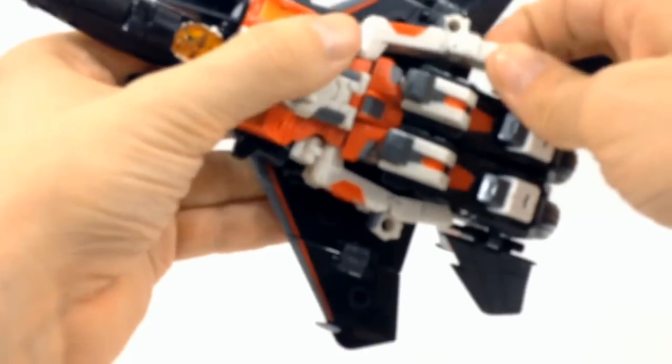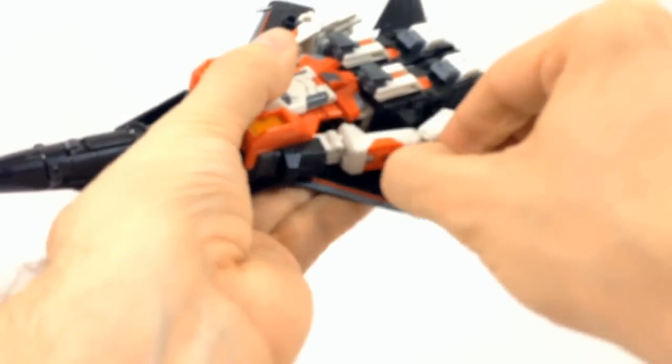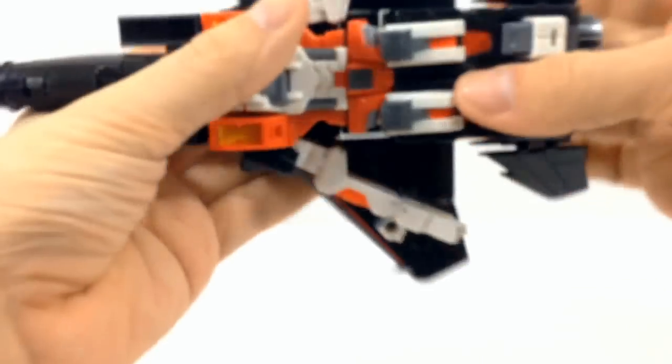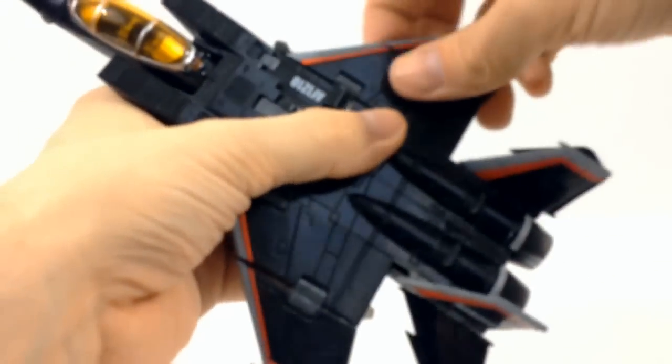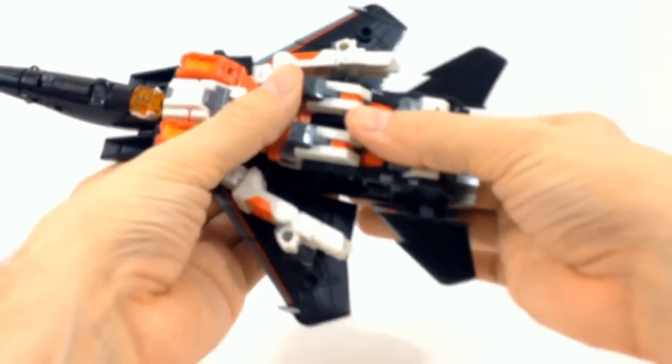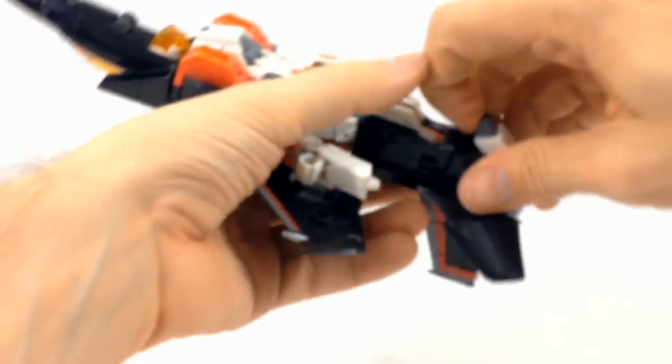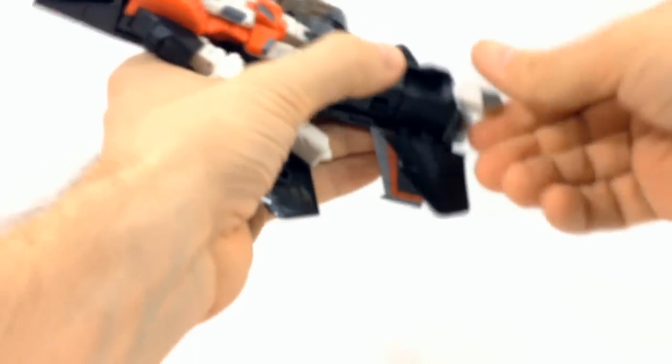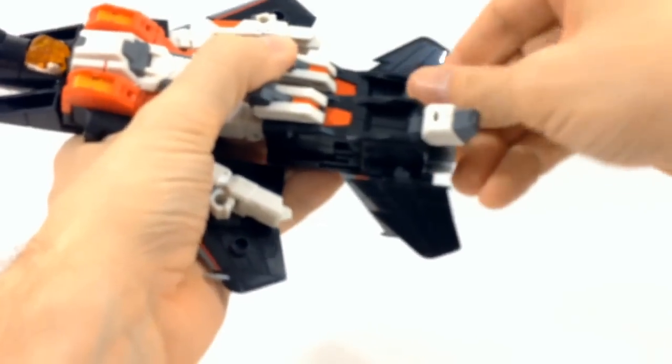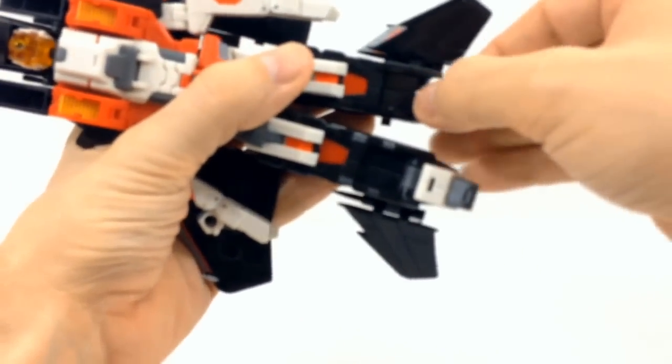Alright, and we'll detach the arms from the side. And then go ahead and pull the wing back just a little bit. And then grab the legs and go ahead and pull those out. Nice click. Pull the feet down. Twist them around. Pull the other foot down and twist it around.